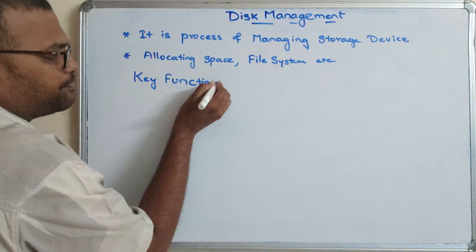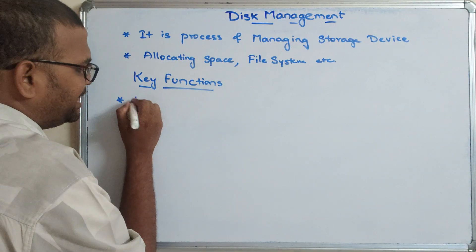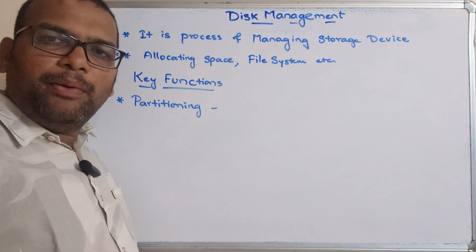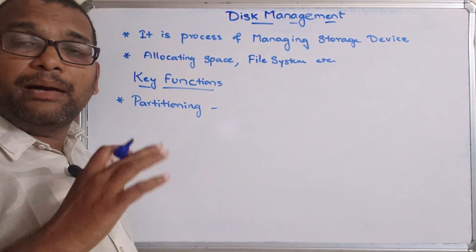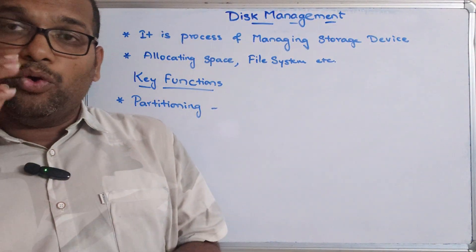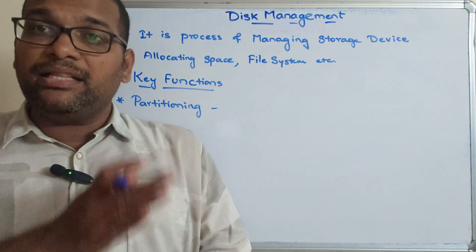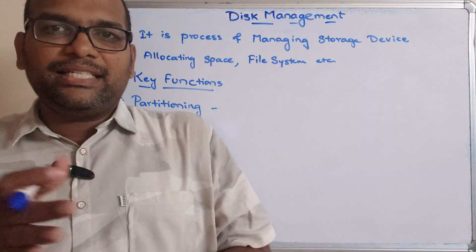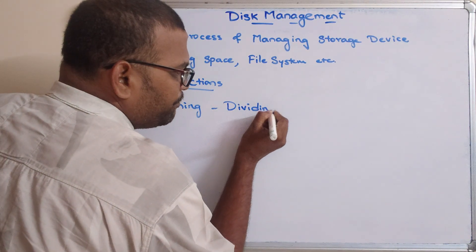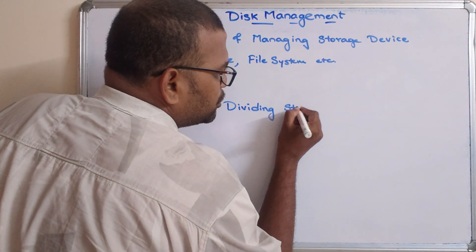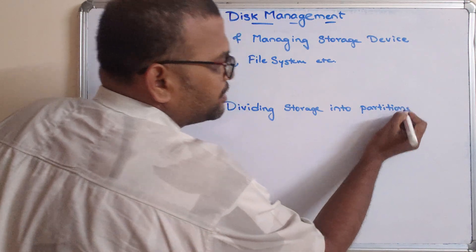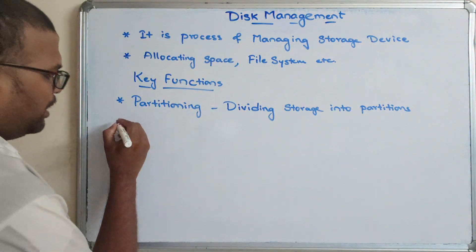The first key function is partitioning. Partitioning means dividing the complete hard disk into different sections or parts. If you open 'This PC' on a computer, you will see the C drive, D drive, E drive, etc. All these drives are partitions, and each partition will be a different section.